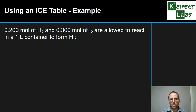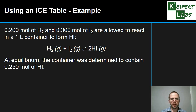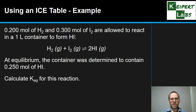Let's look at Example 1. We have 0.2 moles of hydrogen and 0.3 moles of iodine reacting in a one-litre container to form HI. Since the volume is one litre, moles equal concentrations directly. The equation is: H2 + I2 → 2HI, one mole each of hydrogen and iodine forming two moles of hydrogen iodide. At equilibrium, the container contains 0.250 moles of HI. We'll use an ICE table to calculate K for this reaction.